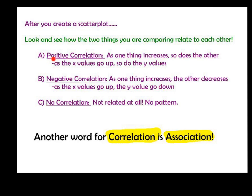The first one is called a positive correlation. What that means is as one thing increases — as one of your data values increases — so does the other one. So as the x value goes up, so does the y value. An example of that might be: as you study more, as your time goes up, your test scores might go up. That would be a positive correlation.